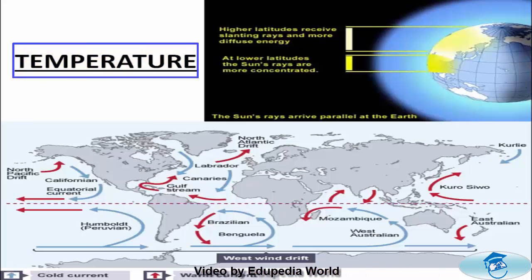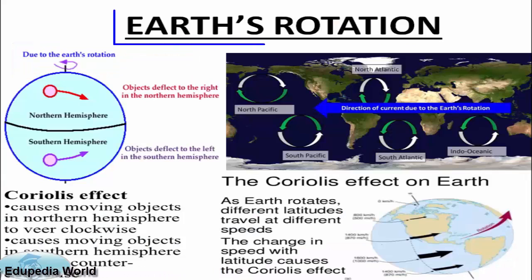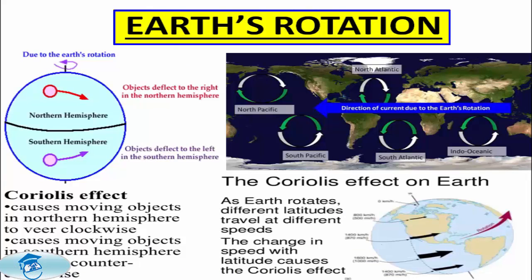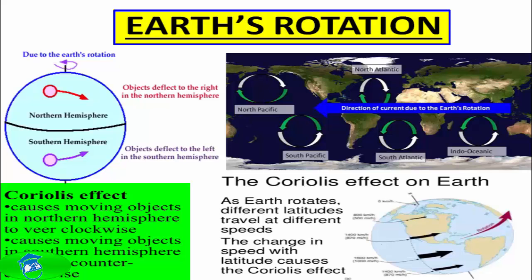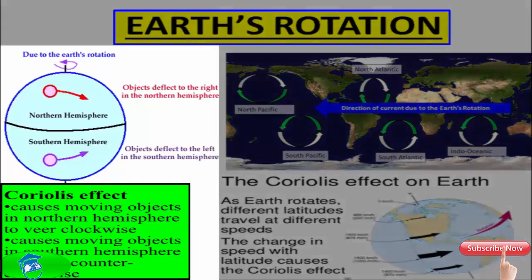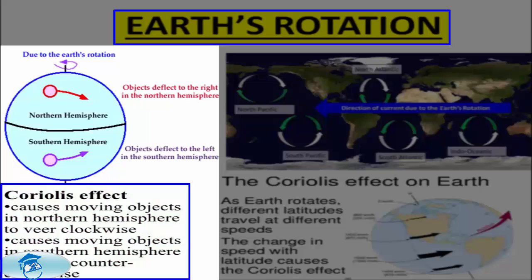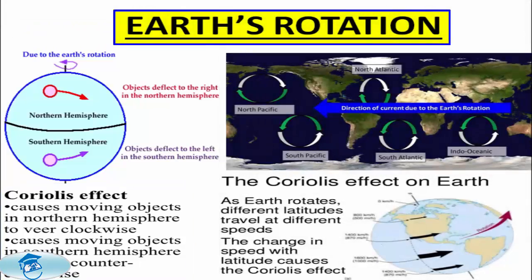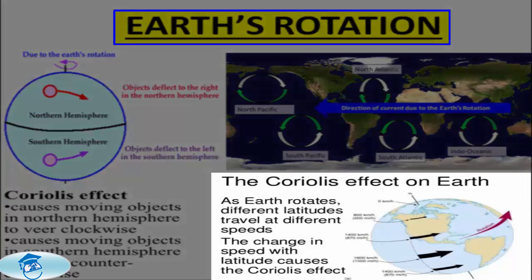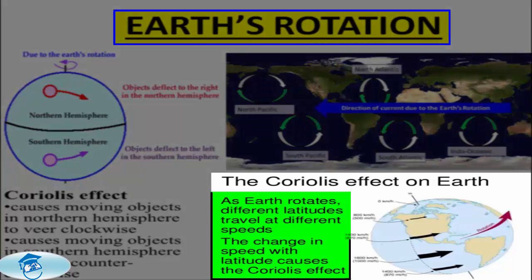The third factor is Earth's rotation. Earth's rotation plays a very big role in causing ocean currents due to the Coriolis effect. The Coriolis effect causes moving objects in the Northern Hemisphere to move clockwise, and simultaneously causes moving objects in the Southern Hemisphere to move counter-clockwise. This happens because as the Earth rotates, different latitudes travel at different speeds, and that change in speed with latitude causes the Coriolis effect.